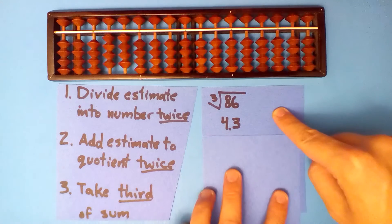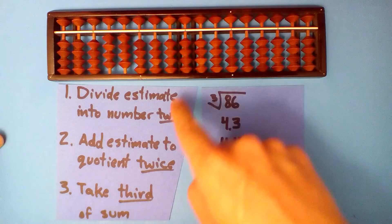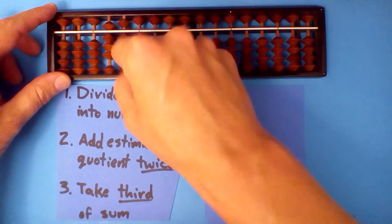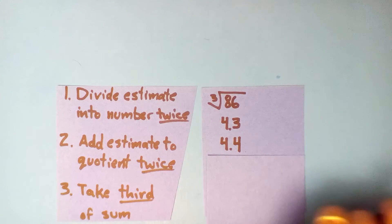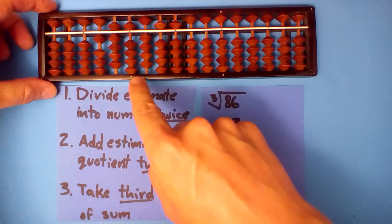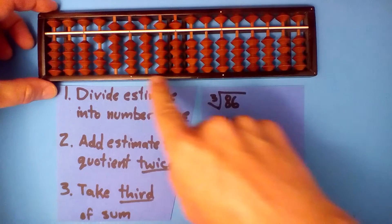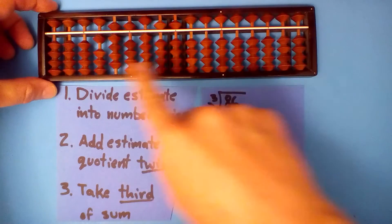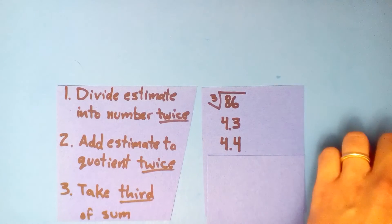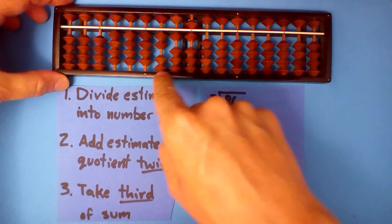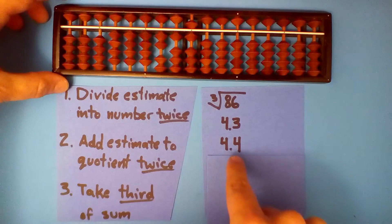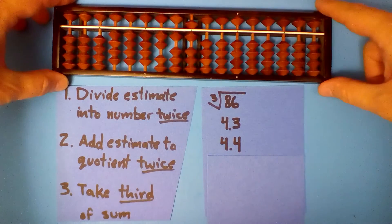Our improved estimate is 4.4. Now let's repeat this process. Divide 4.4 into 86 — you should get 19.5455. We only need six digits. Now do it again: divide 4.4 into this number. You should have 4.44216.